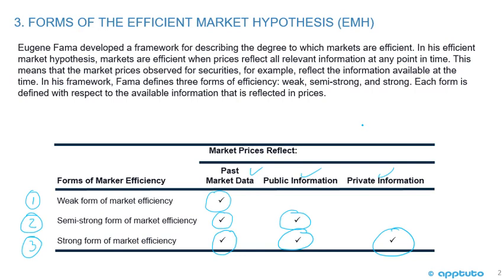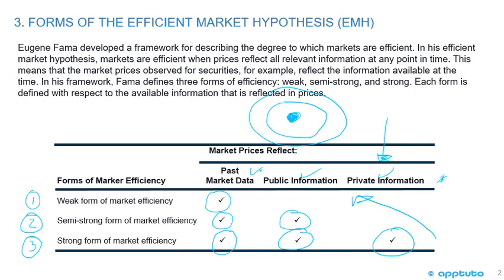The strong form reflects past market data, public information, and private information. Note this is academic — a theory or hypothesis. For example, the strong form can't be proved because we don't have access to private information. Another way to visualize this is with concentric circles: the weak form is in the middle, surrounded by semi-strong, with strong on the outside.